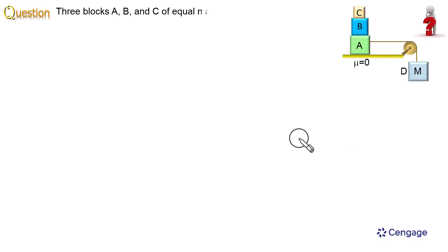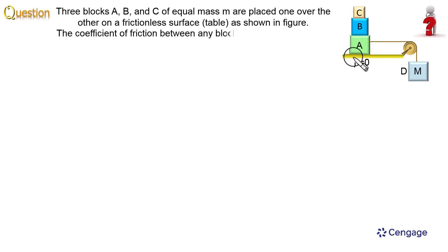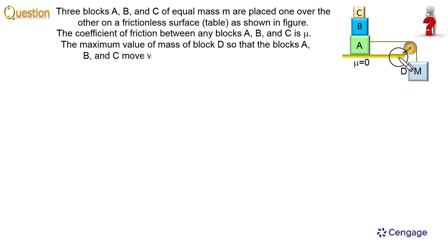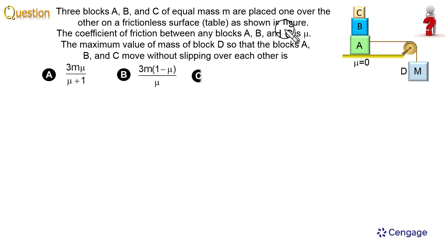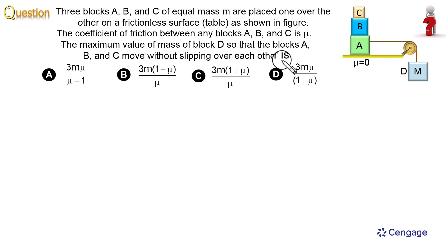In this question, 3 blocks A, B, C have equal mass m and the system is placed over a smooth horizontal surface. The coefficient of friction between block A and B, and between B and C, is mu. We need to calculate the maximum value of mass of block D so that blocks A, B, C move without slipping over each other. We are given 4 options.